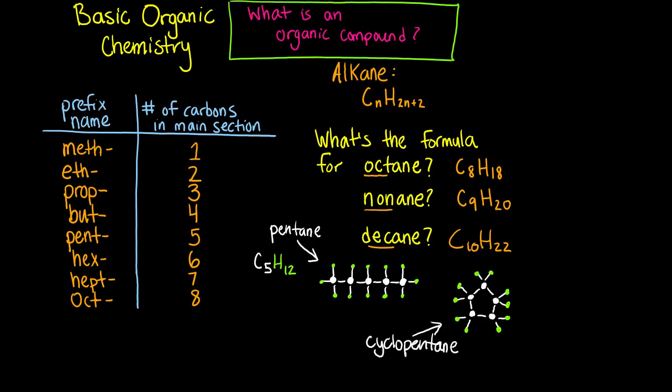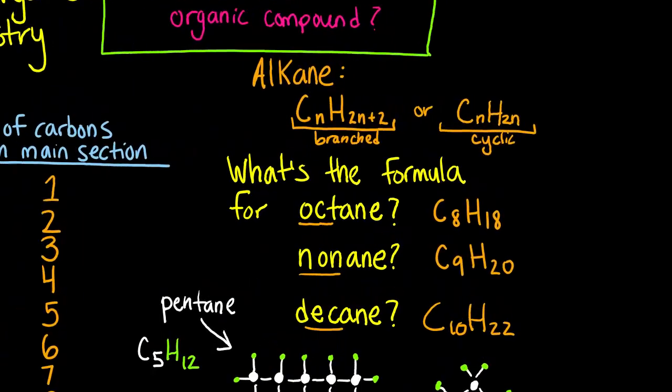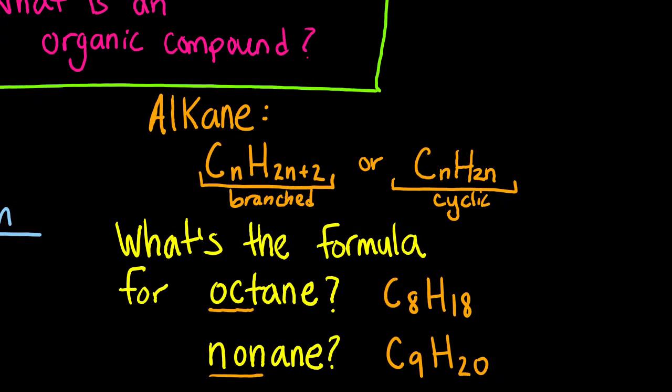Thus, the formula for cyclopentane would be C5, still because it's pentane, but the cyclo lets us know that there are two fewer hydrogens, which would mean it is C5H10. At the top, I added that an alkane is CnH2n plus 2 for a branched alkane, or, if it is a ring, it is CnH2n.